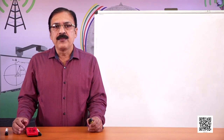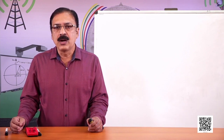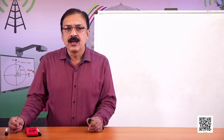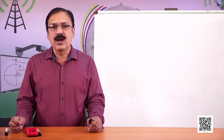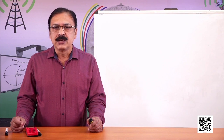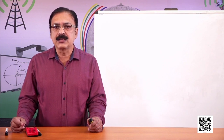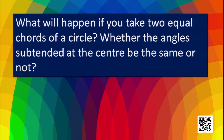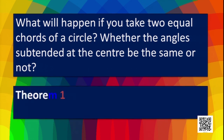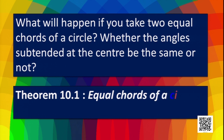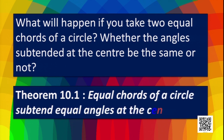Now if two chords are equal, what can we say about the angles subtended at the center — will they be the same or not? This is shown by the statement of this theorem: equal chords of a circle subtend equal angles at the center.